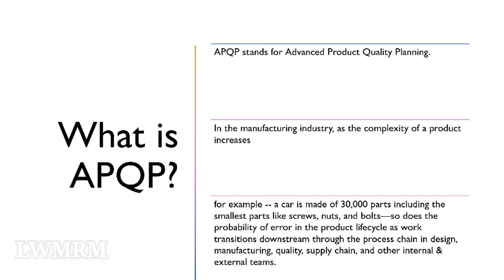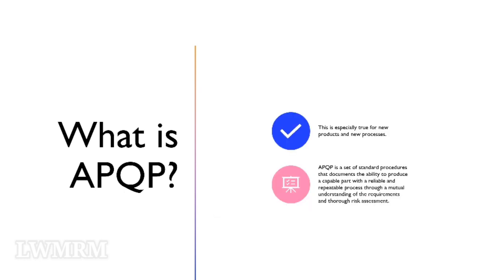In the manufacturing industry, as the complexity of a product increases — for example, a car is made of 30,000 parts including the smallest parts like screws, nuts, and bolts — so does the probability of error in the product lifecycle as work transitions downstream through the process chain in design, manufacturing, quality, supply chain, and other internal and external teams. This is especially true for new products and new processes. APQP is a set of standard procedures that documents the ability to produce a capable part with a reliable and repeatable process through a mutual understanding of the requirements and thorough risk assessment.